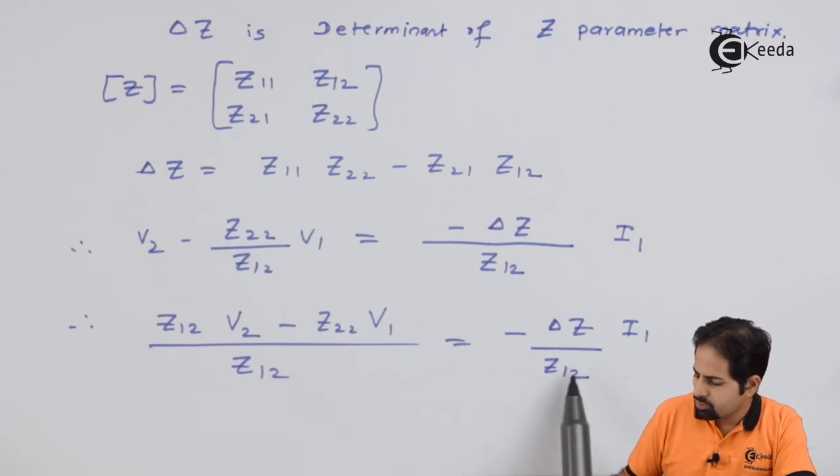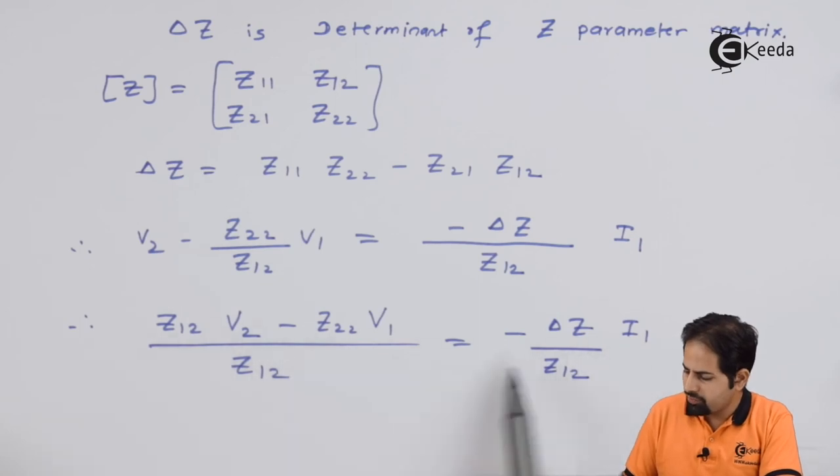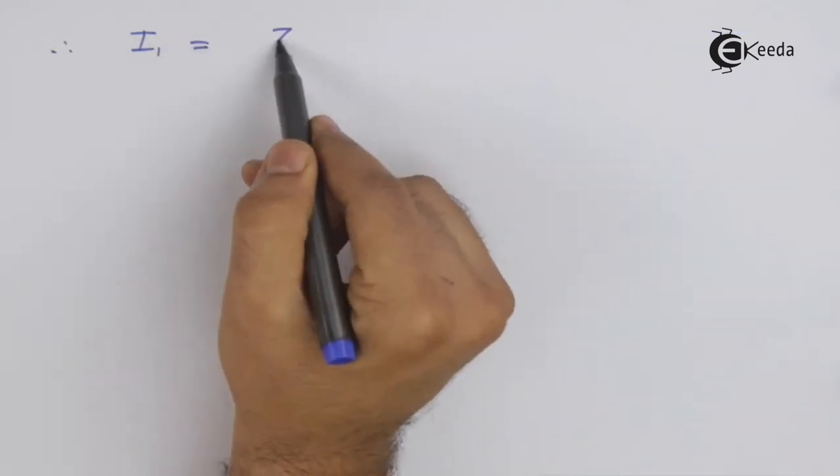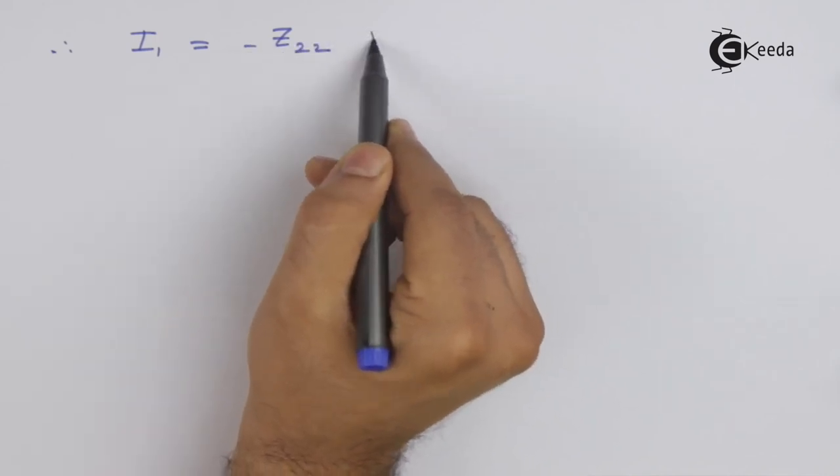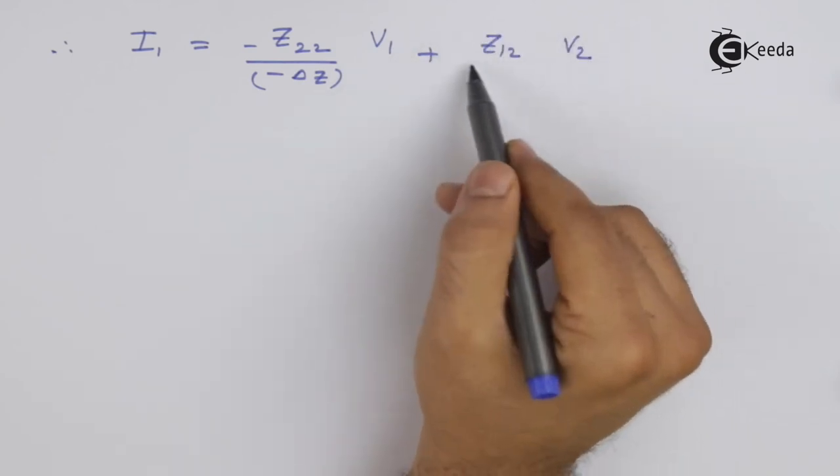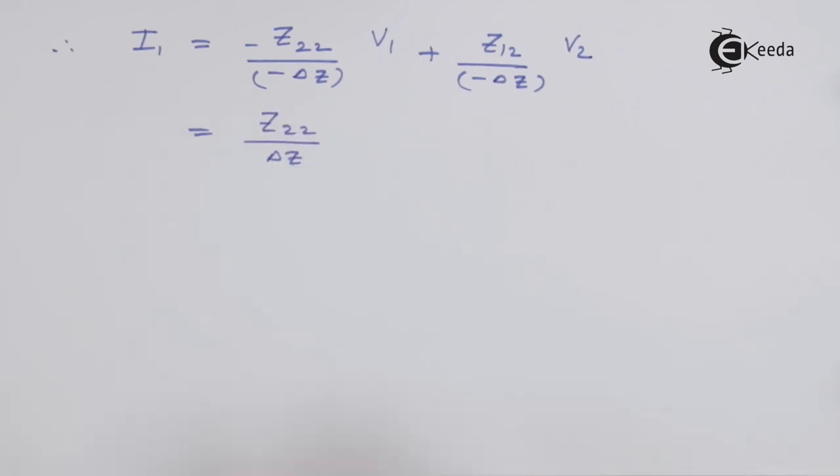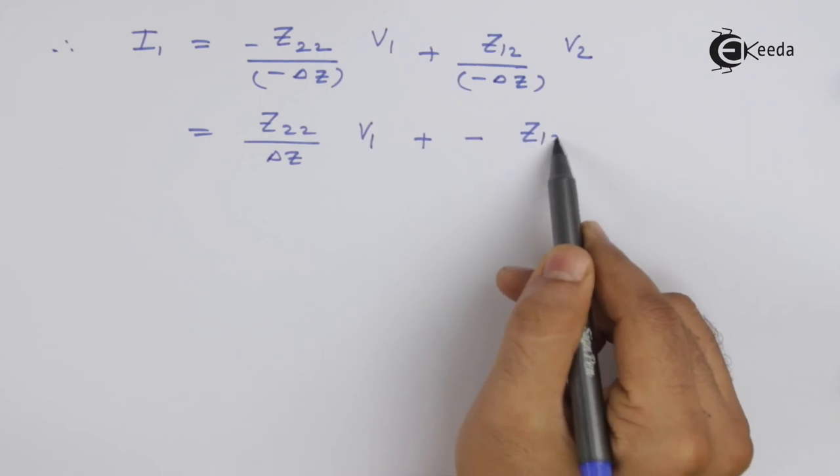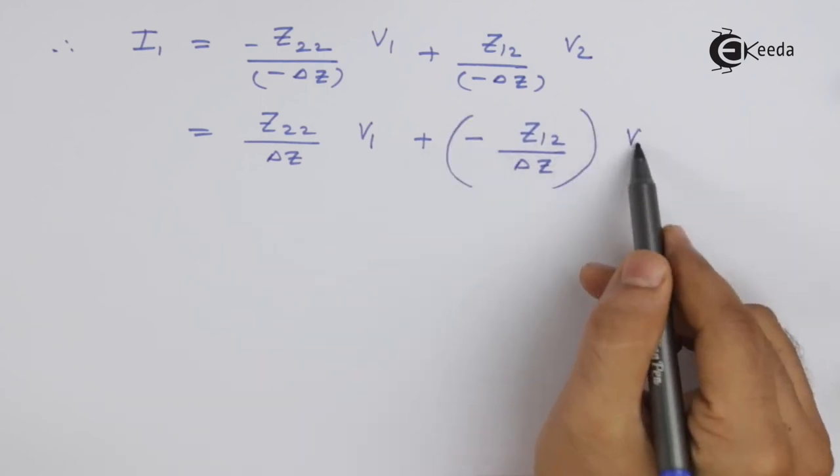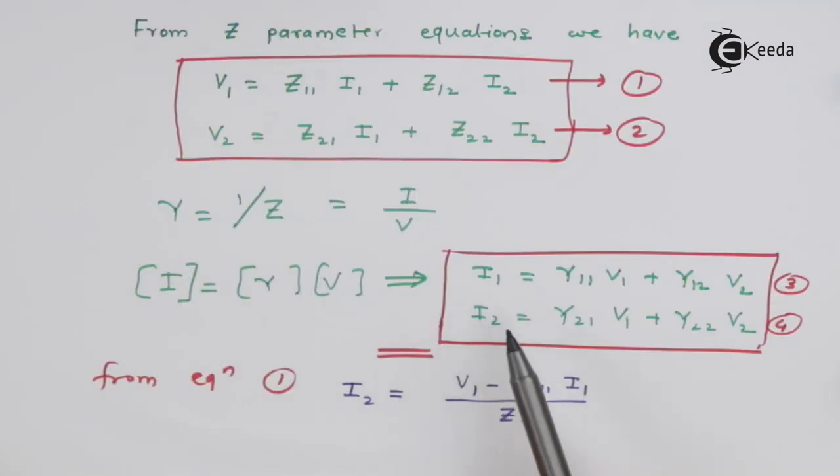Here, this Z12 will get cancelled and we can get the individual value for I1. So I1 will be this value divided by minus of delta Z. So we have got the equation for I1. If you compare this equation with equation number three, which is I1, it is Y11 and Y12 is what we have got.